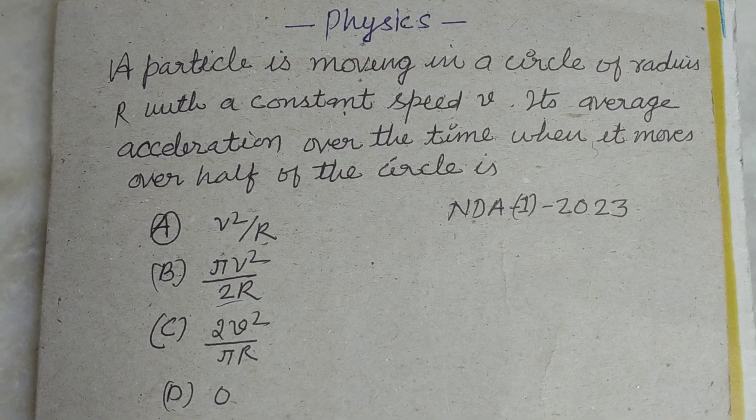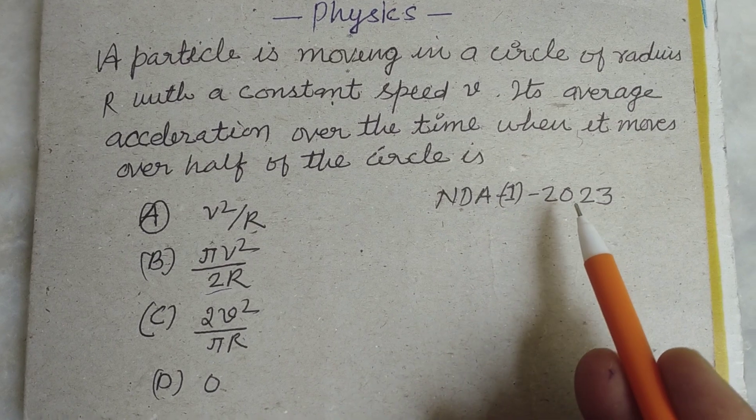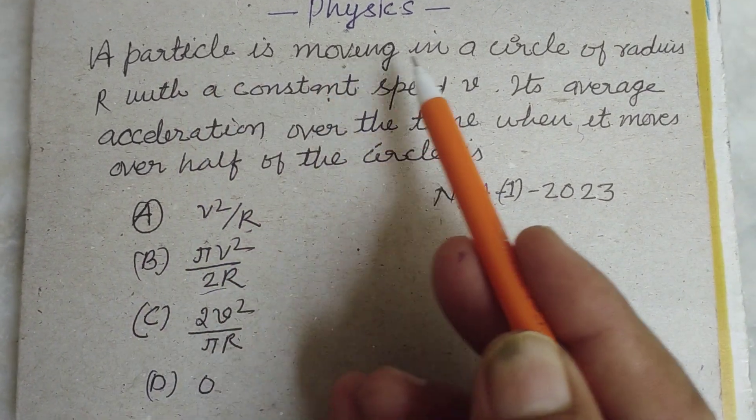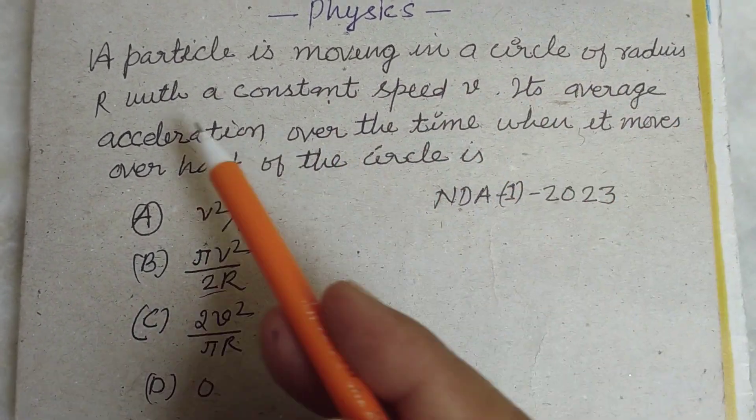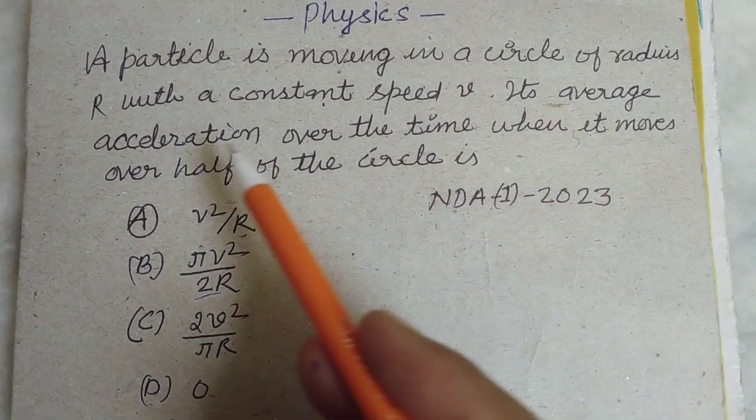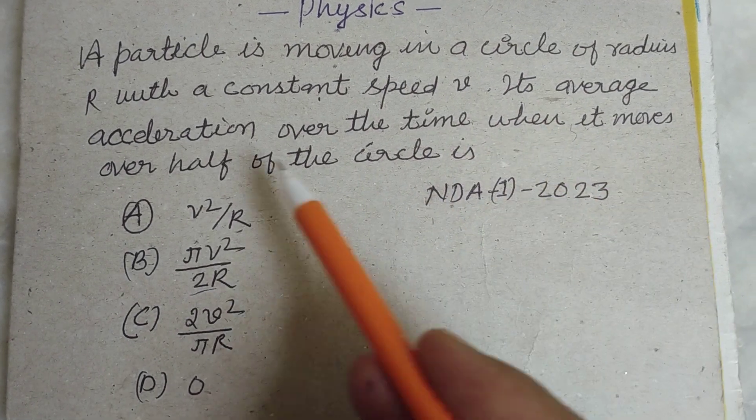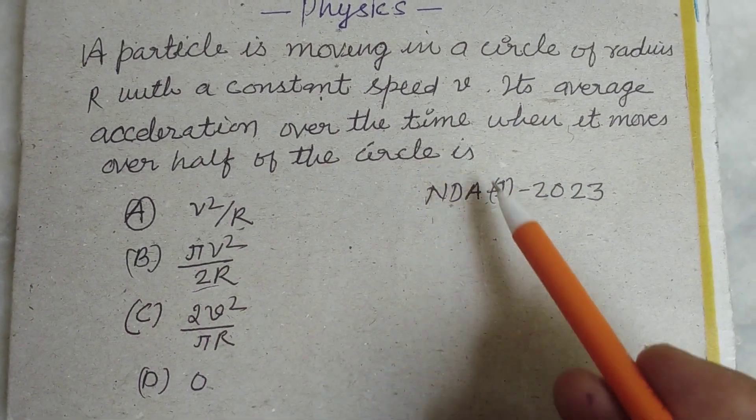Hello student and welcome to this YouTube channel. This is a question from NDA 1st 2023. A particle is moving in a circle of radius R with a constant speed V. Its average acceleration over the time when it moves over half of the circle is.